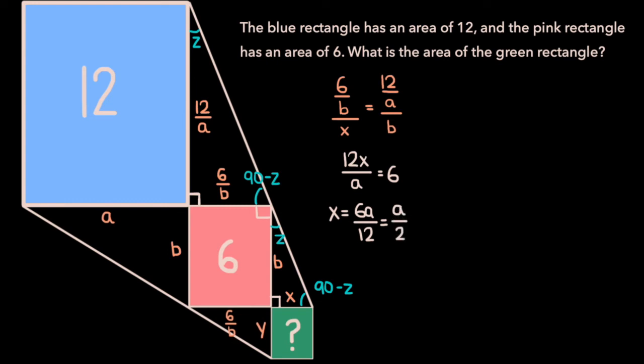Now we can do essentially the same thing for y. It turns out that this triangle and this triangle are similar. I'm not going to go through the same step-by-step process of showing that each of the angles in these triangles are the same, but if you were to do that, you would find that this angle and this angle are the same, and that this angle and this angle are also the same.